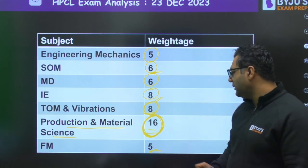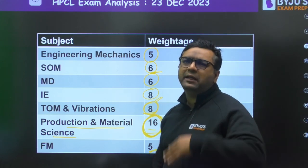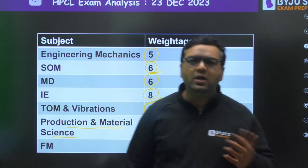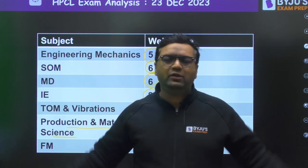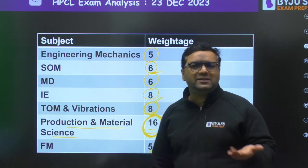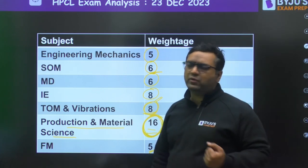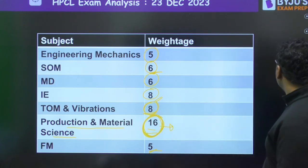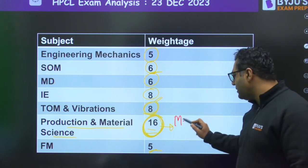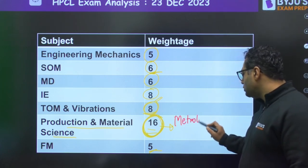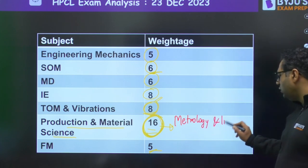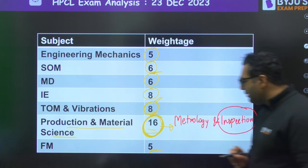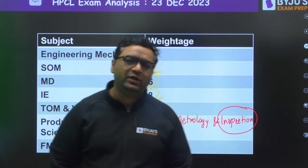In Production and Material Science, 16 questions are there from various topics like preheating in welding, material removal rate, and grinding topics. Also, a majority of questions were asked from a topic which students are generally not very good at — that is Metrology and Inspection.